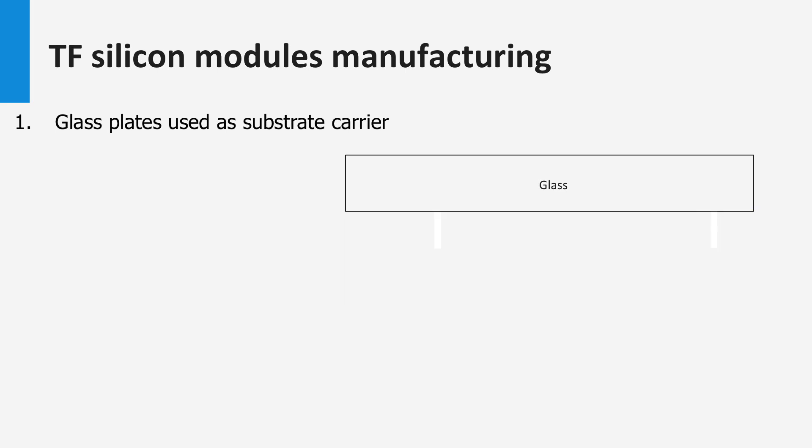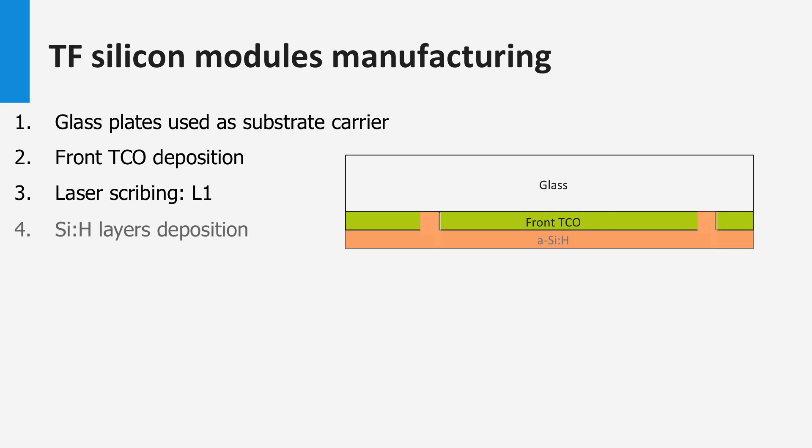The solar module and its interconnection is processed in one process sequence. The substrate carrier of the module is a large glass substrate. On the glass plates the front TCO is deposited. Using intense lasers, lines of TCO are removed. This process is called laser scribing and determines the area of the solar cells. On top of the TCO the various silicon layers are deposited, making the PV active part.